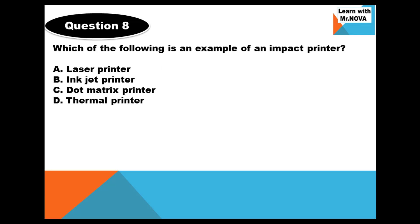Question 8. Which of the following is an example of an impact printer? You know, there are two types of printers: impact and non-impact printer. The options are: A. The laser printer, B. The inkjet printer, C. The dot matrix printer, D. The thermal transfer or thermal printer. Five seconds to answer this question. The answer is C. The dot matrix printer is an example of an impact printer.